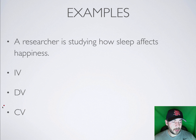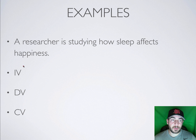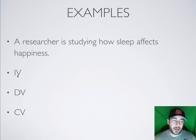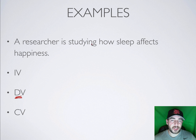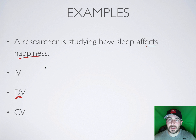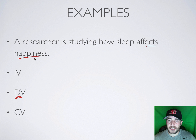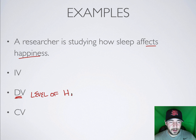Last example: a researcher is studying how sleep affects happiness. This one's a little more vague, which makes it more difficult. We're going to look for the dependent variable. When we see the word 'affects,' what usually comes right after that word is something that's being measured — 'how blank affects blank.' What comes right after 'affects' is usually the dependent variable. In this case, the dependent variable would be level of happiness.